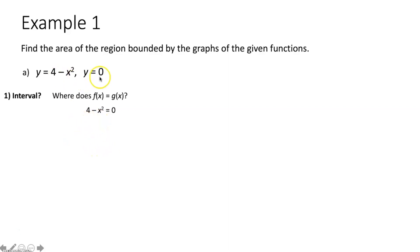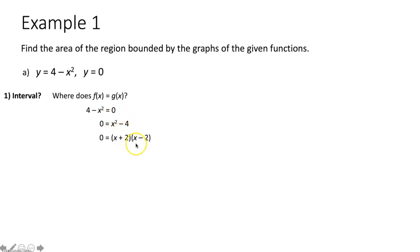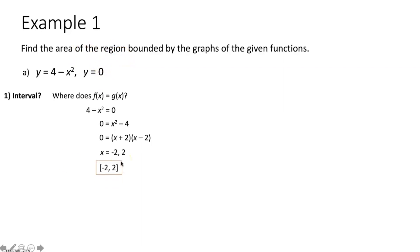Setting 4 - x² = 0 and solving for x: adding x² to both sides and subtracting 4, we get x² - 4 = 0, which is a difference of squares. This factors into (x + 2)(x - 2) = 0. Using the zero product property, we get x = 2 and x = -2. Those are the two x values at which the functions intersect, meaning those x values will bound the region between these two functions and define our interval.